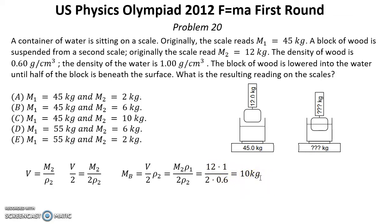After putting numbers we will get 10 kg. That's the buoyancy force acting on the wooden block and on the lower scale. So we subtract 10 kg from the second reading and add 10 kg to the first reading. That will be 55 kg for M1 and 2 kg for M2.